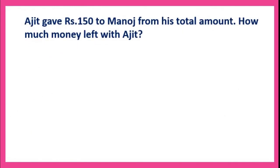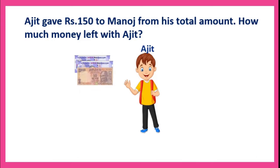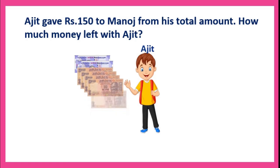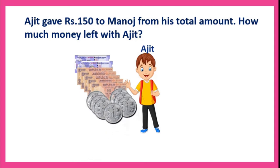Here, Ajit gave Rs. 150 to Manoj from his total amount. How much money is left with Ajit? We will count: 100, 200, then 210, 220, 230, 240, 250 rupees. He also has some coins — 251, 252, 253, 254, 255, 256, 257. So Ajit has a total of Rs. 257.